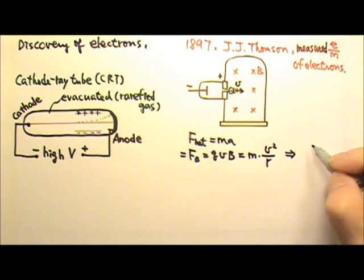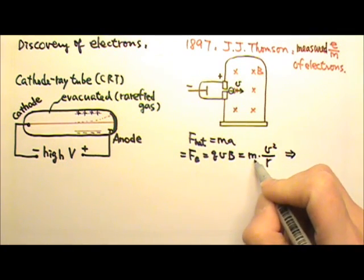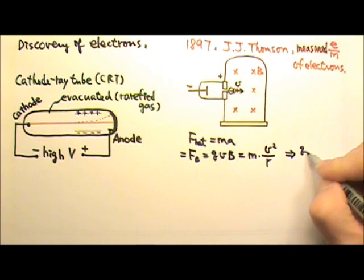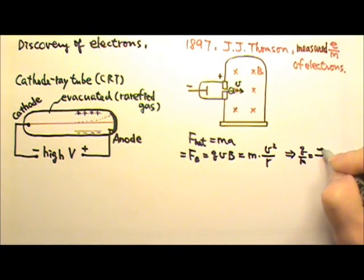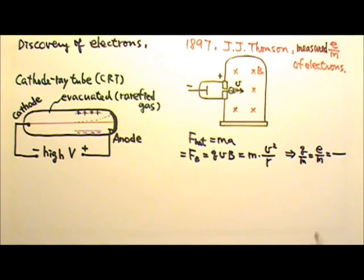Therefore, we get the charge-to-mass ratio Q over M, which will be E over M for the electron, equals V over BR.